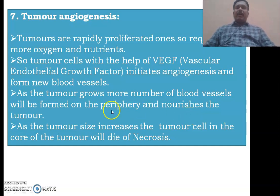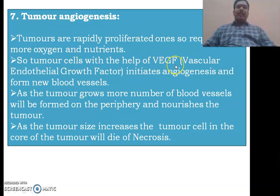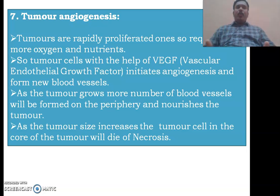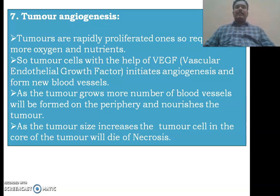Tumor angiogenesis: as the tumor is growing very fast, it requires more oxygen and nutrients, and for this it needs blood vessels. The tumor cells release vascular endothelial growth factor (VEGF) and initiate the angiogenesis process. As the tumor grows, more blood vessels are formed on the periphery of the tumor to nourish it. However, the tumor cells in the core part of the tumor will die by necrosis as they do not receive sufficient nourishment.